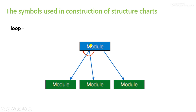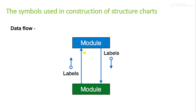Another symbol is the loop, which is represented using a curved arrow. This loop means repetition — when a module is calling itself or being called multiple times, we represent that using the curved arrow. Repetition can be represented using this type of arrow in the structure chart.